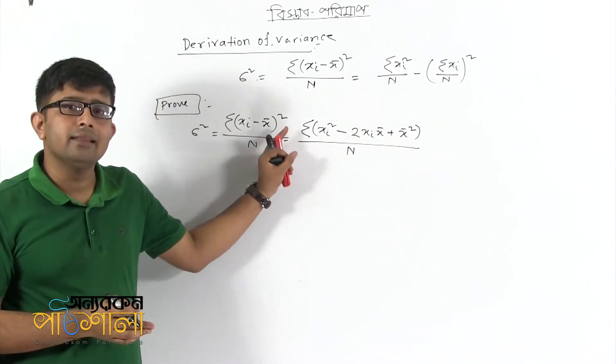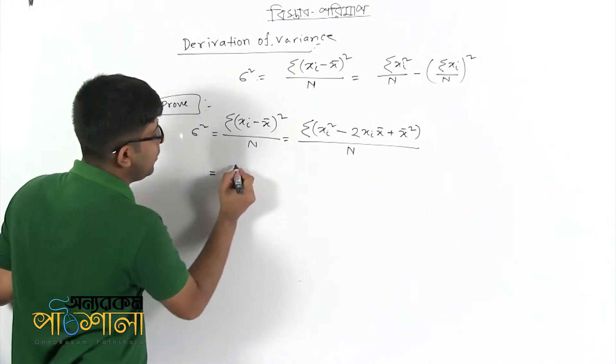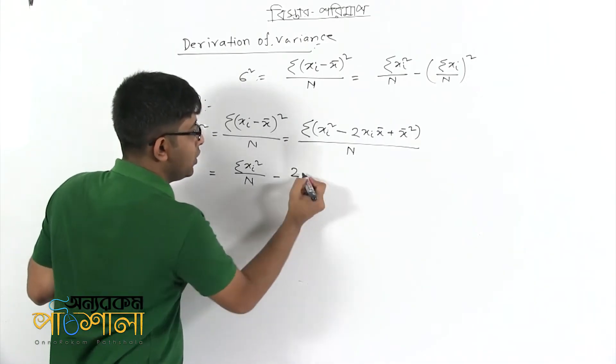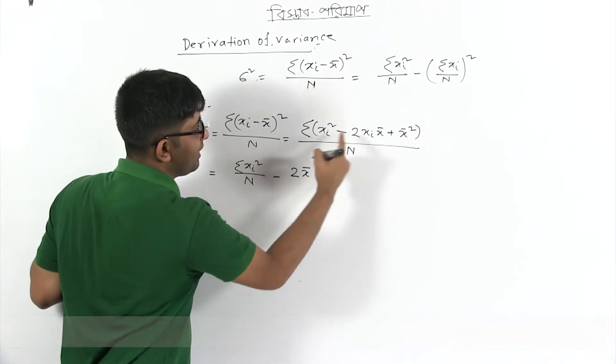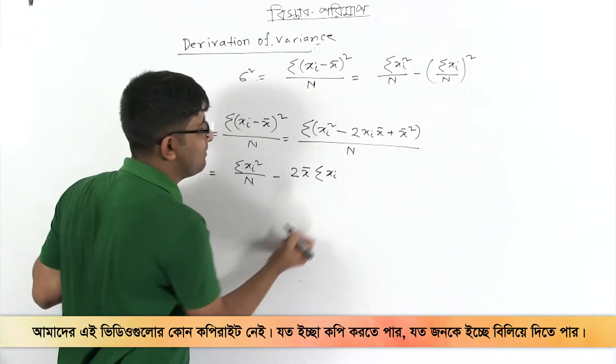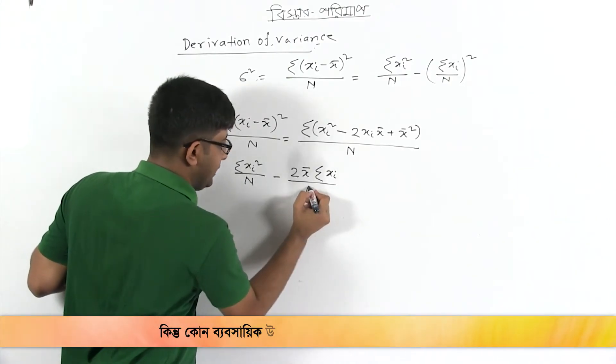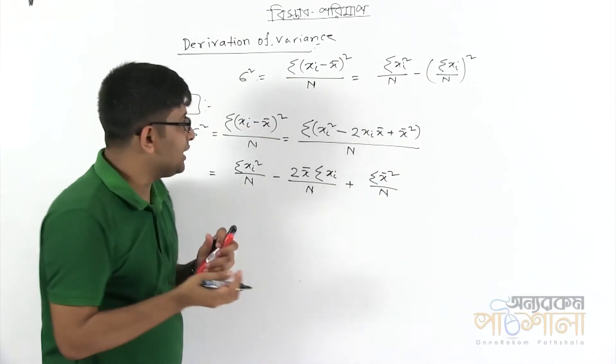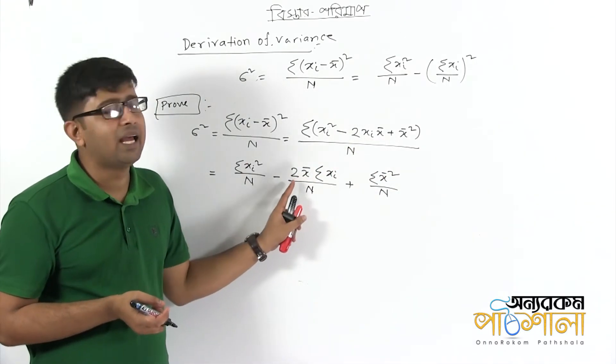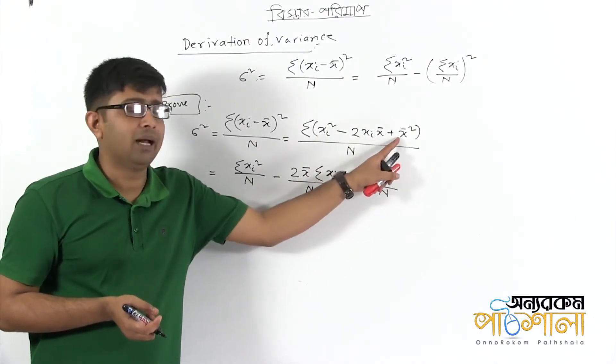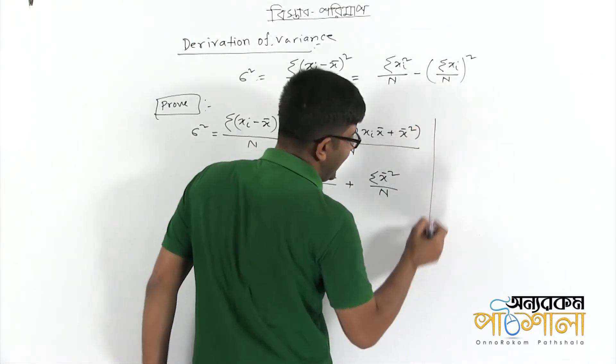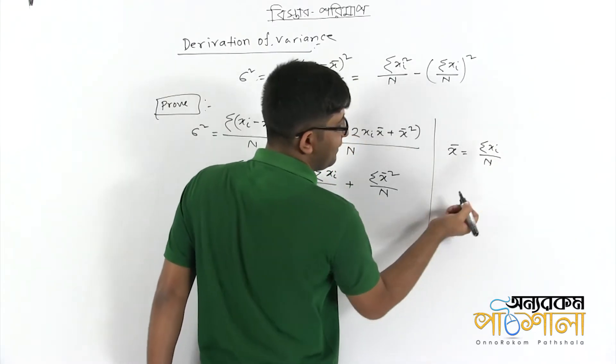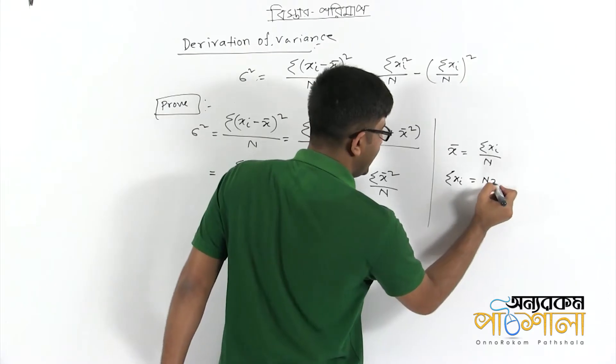Now writing the sum three times: summation of xi square divided by n minus 2x bar times x bar. The summation of xi divided by n equals x bar. So the summation of xi equals nx bar.